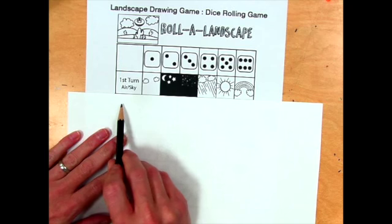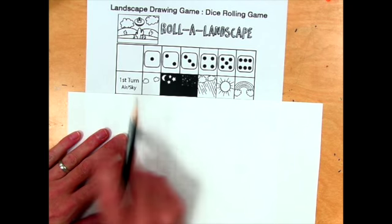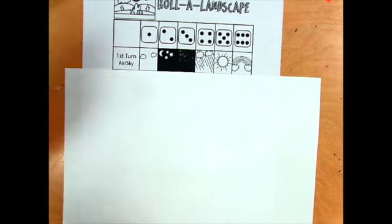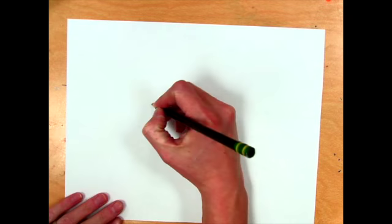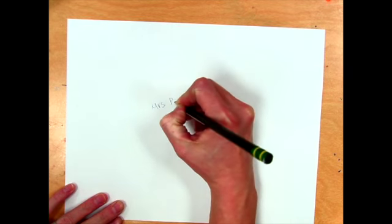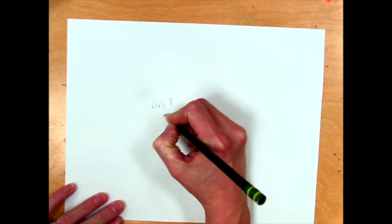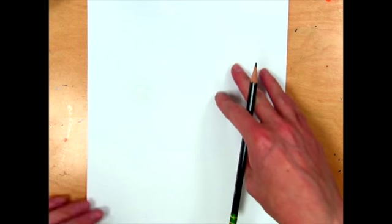On your first turn, you'll be drawing something in the air or the sky. But before I roll, let's talk about your paper. This is a landscape, and landscape means my paper is going to be long. Write your name lightly on the back in pencil and your grade, then turn it over. You can draw it up and down—we call this portrait—or you can draw it side to side, landscape, and that's how I'm going to do it today.